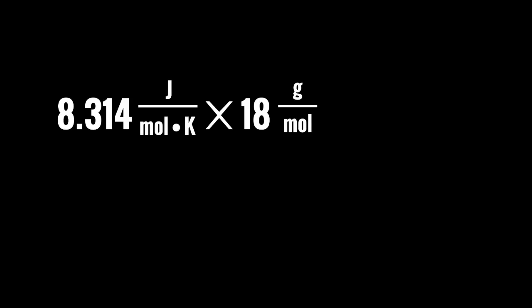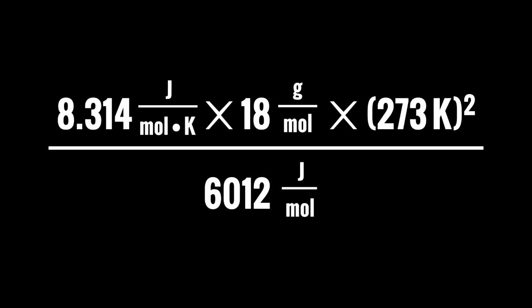So for example, water, which is the universal solvent, and we are going to put NaCl on top of this water. We have 8.314 joules per mole Kelvin, which is a value for the ideal gas constant. Then we multiply that by the molar mass of water, which is 18 grams per mole. Then we multiply that by the square of the normal freezing point of water, which is 273 Kelvin. We divide all of that by the molar enthalpy of fusion of water, which is 6,012 joules per mole.